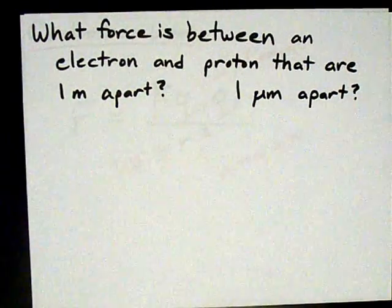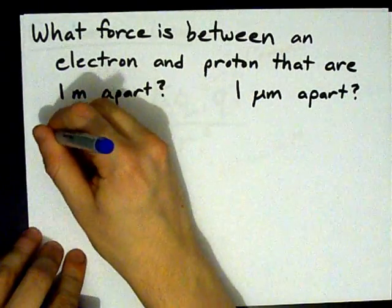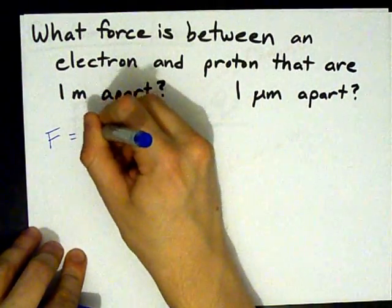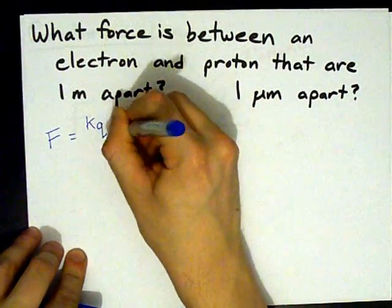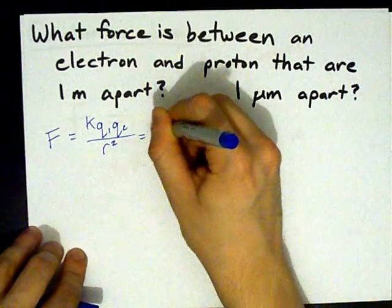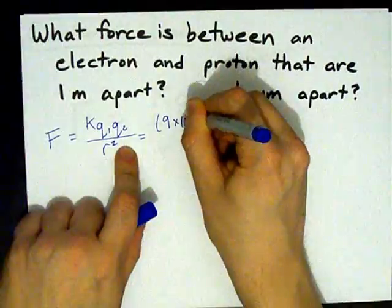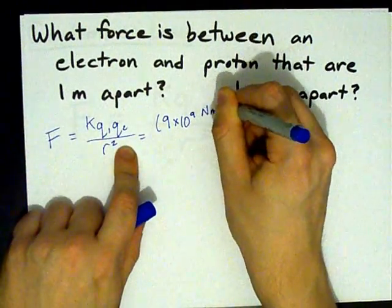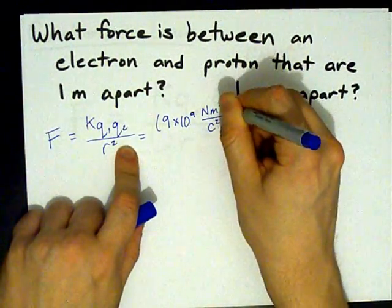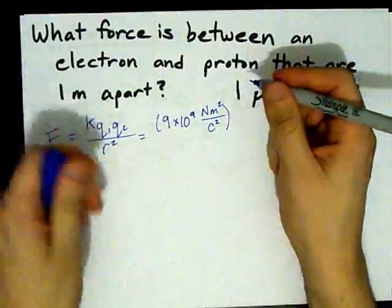Well, lucky for us, we have a formula. The force between the two is K, Q1, Q2, over R squared. K is nine times ten to the power of nine newton meters squared per coulombs squared. Again, those units just make sure everything cancels out properly.